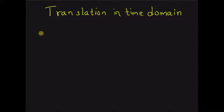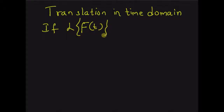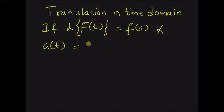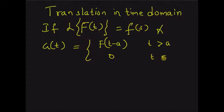The property can be stated as follows: if the Laplace transform of a function f(t) is equal to F(s), and there is a new function g(t) in the time domain equal to f(t - a) — that is, a shifted version of f(t) — for t greater than a, and equal to 0 for t less than a, then...